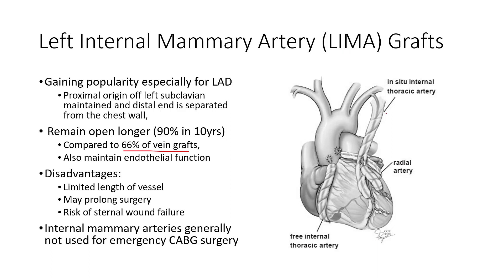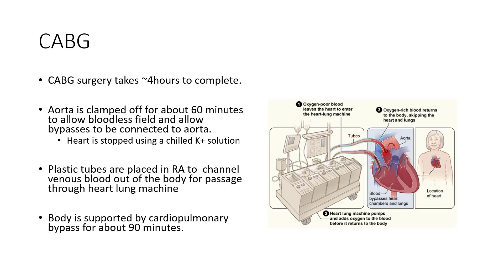The disadvantages of the LIMA graft are that it's a longer procedure because of careful dissection on the chest wall, and there's a limited length. The saphenous vein is pretty easy to access and pretty long. Also, the left internal mammary artery feeds the sternum, so one of the big problems with a CABG procedure is getting the chest to close back up and heal. If perfusion is impaired, it may cause a malunion to the chest wall, leading to serious cosmetic and painful situations post-surgery. It's almost never used for emergent CABG because it's a longer procedure.